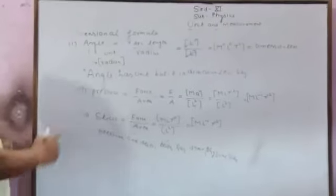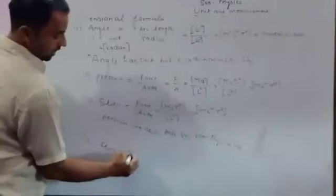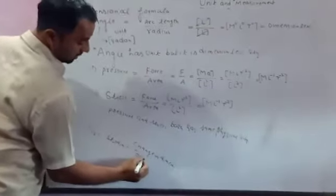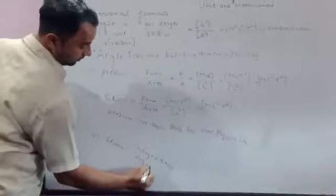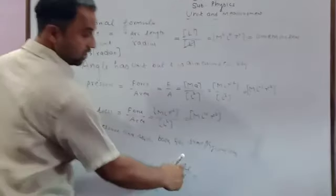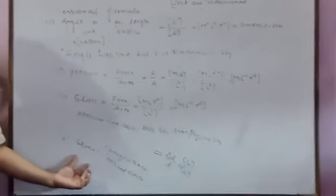Next, we have to find the dimensional formula for strain. Strain is equal to change in dimension upon original dimension, that is ΔL upon L. Change in length is measured in L and original length is also measured in L, so L cancels out. Hence strain is a dimensionless quantity. This is how we derive dimensional formulas.